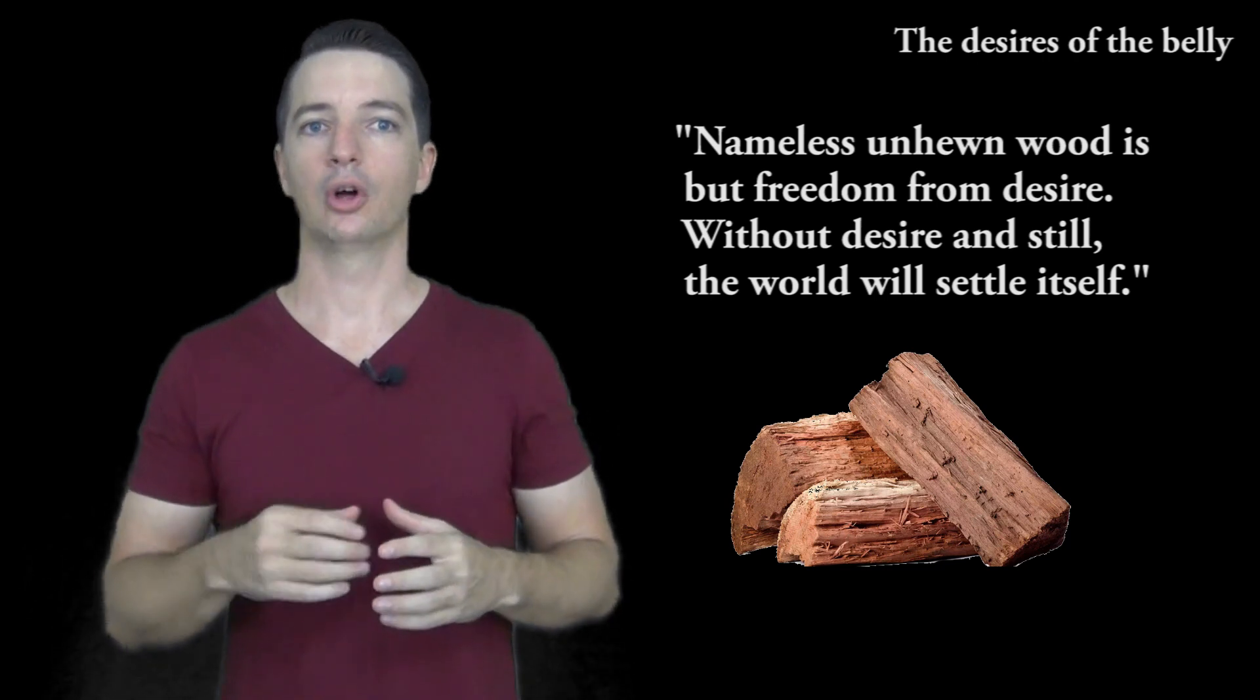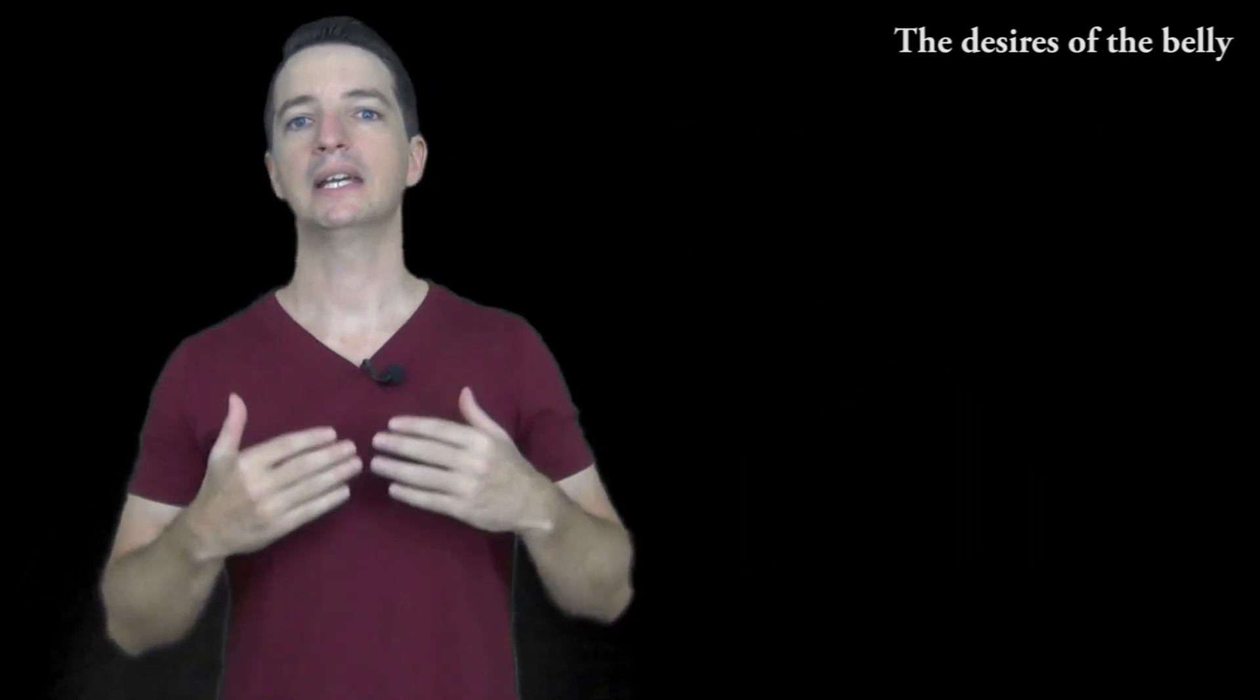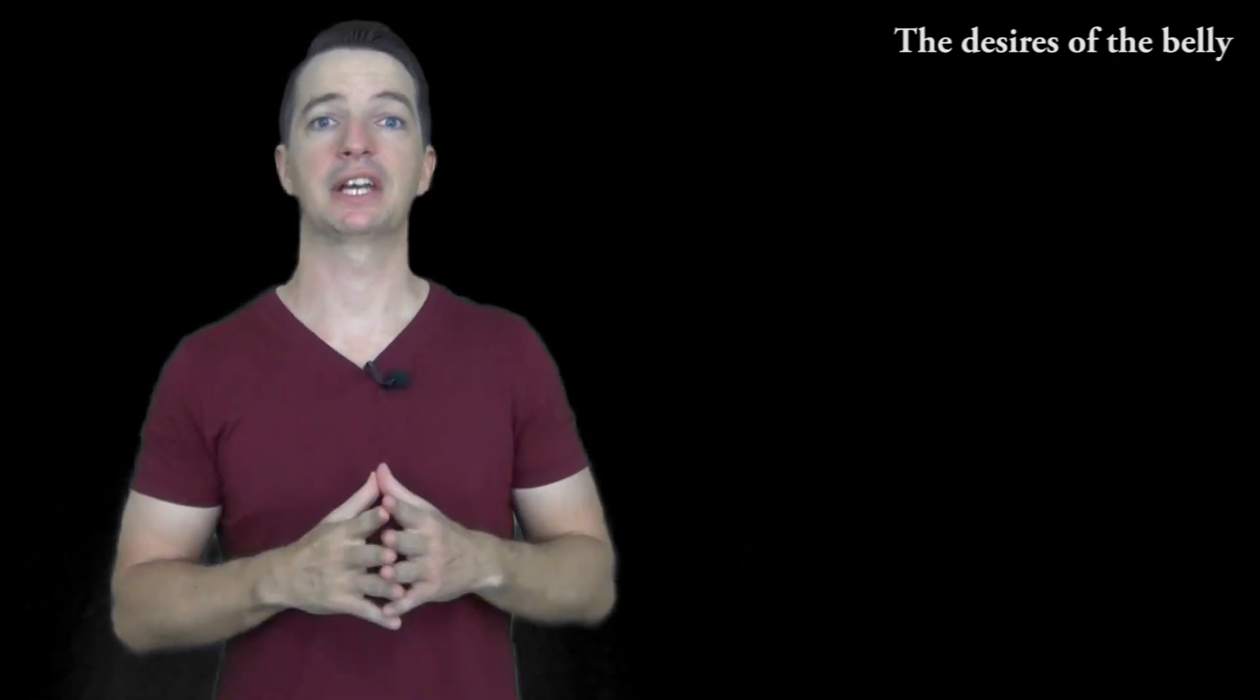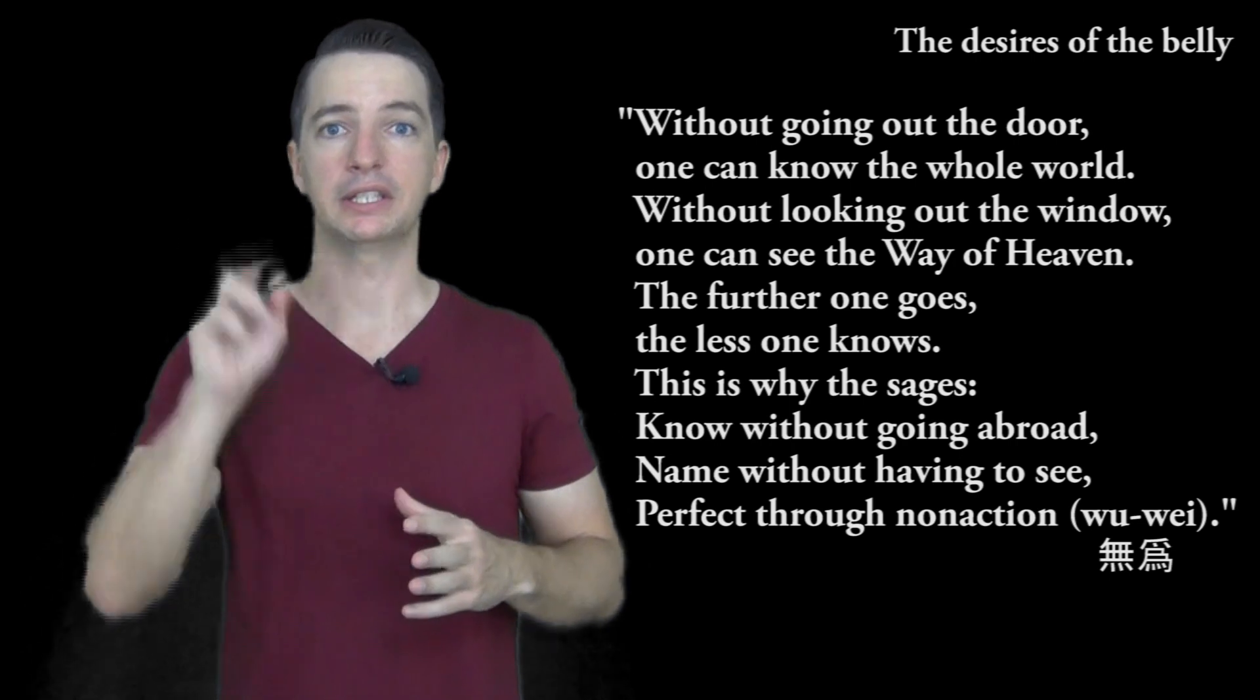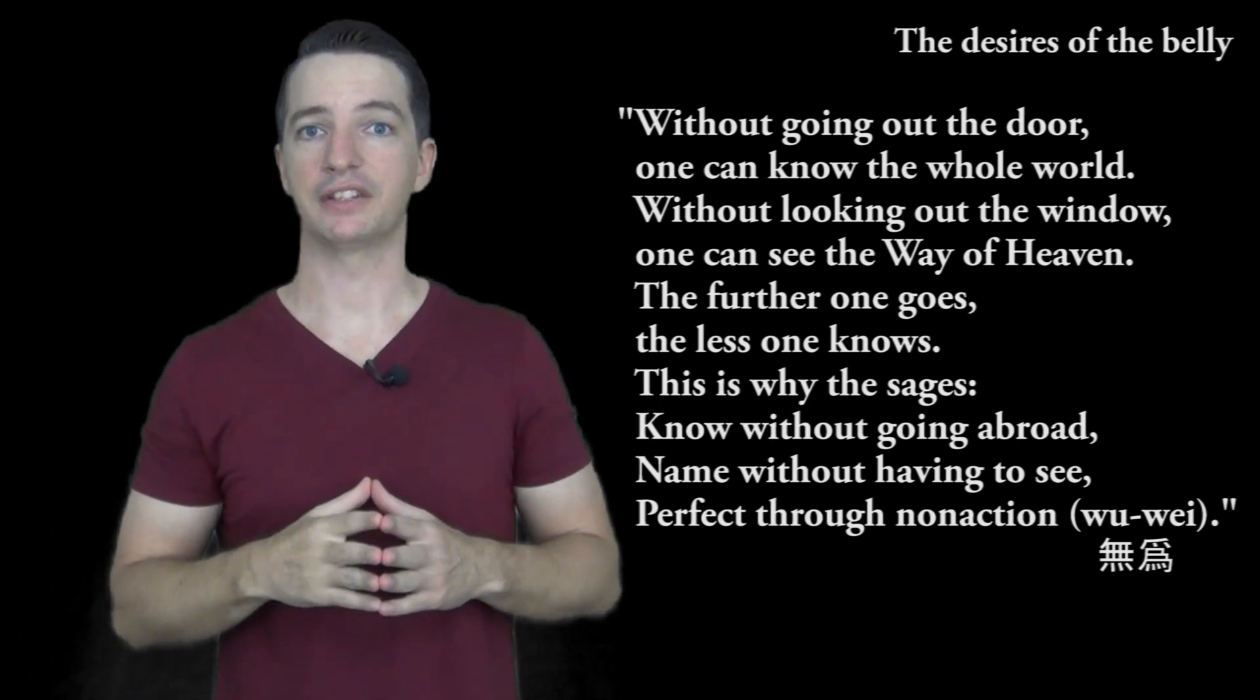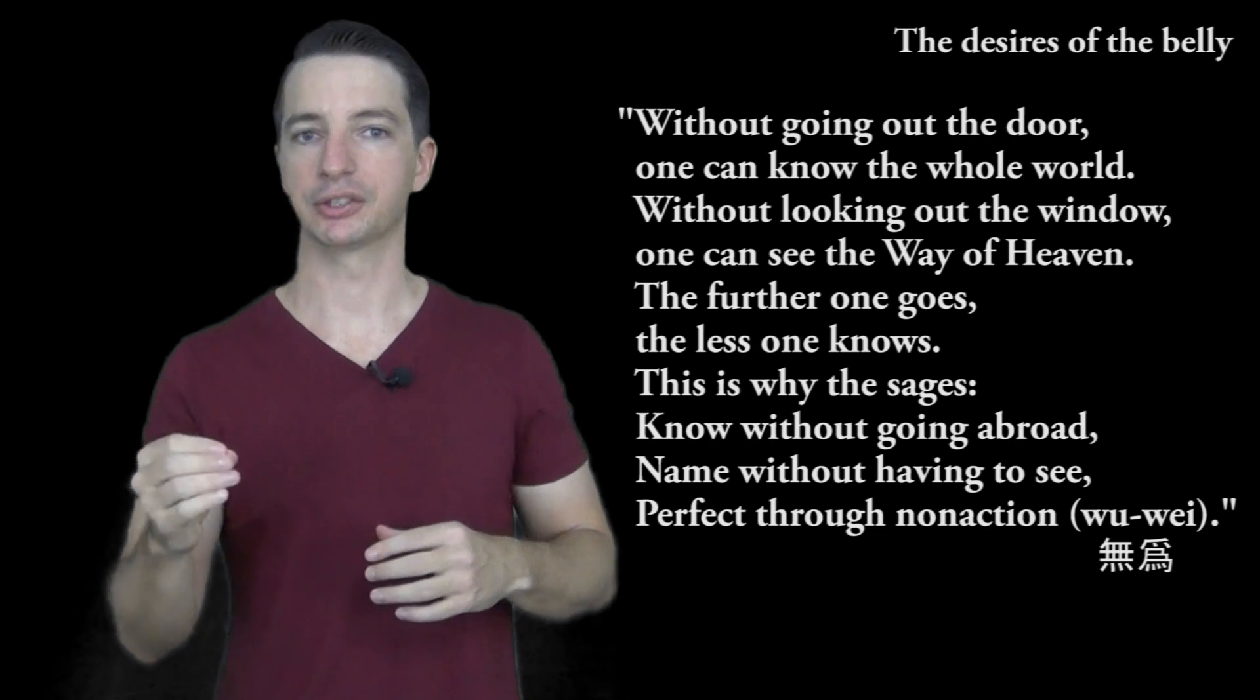Instead of going on this journey of self-cultivation that Confucius recommends, we just need to return home to the uncarved block. This return home illustrates Lao Tzu's view that human perfection is through non-action, wu wei. Chapter 47 of the Tao Te Ching states: Without going out the door one can know the whole world. Without looking out the window, one can see the way of heaven. The further one goes, the less one knows. This is why the sages know without going abroad, name without having to see, perfect through non-action, wu wei.